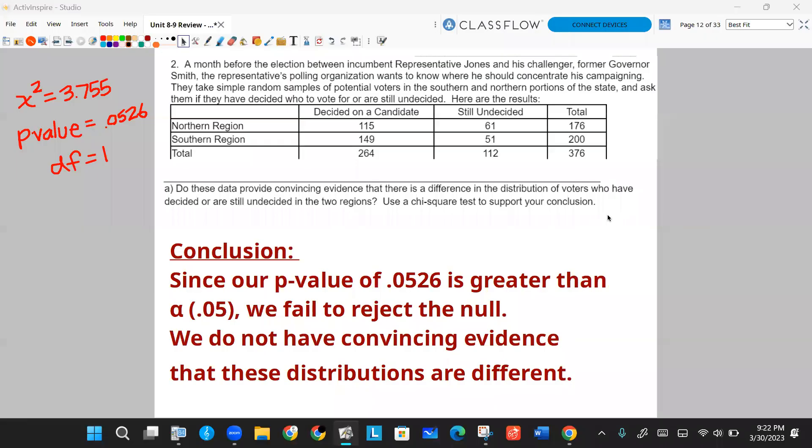Well, our typical conclusion is just linking your p-value to your alpha. As you can see, it's just slightly too big. So we're going to fail to reject the null, meaning we don't have convincing evidence that these distributions are different. That'll be the end of this video. Next video is going to go over FRQ number three. Thank you.